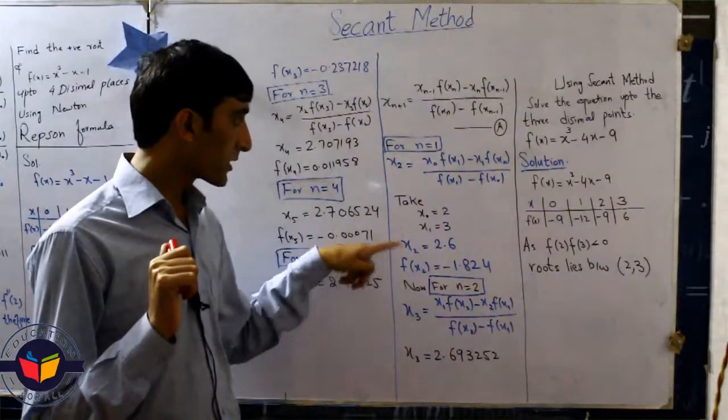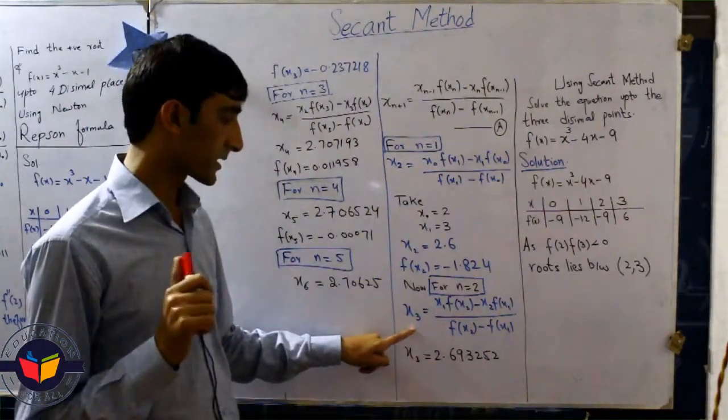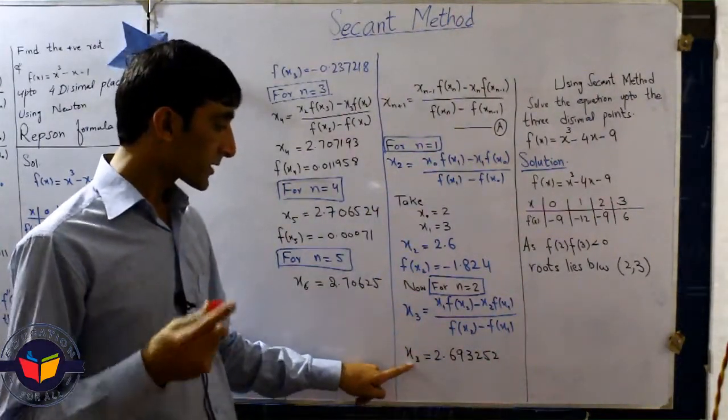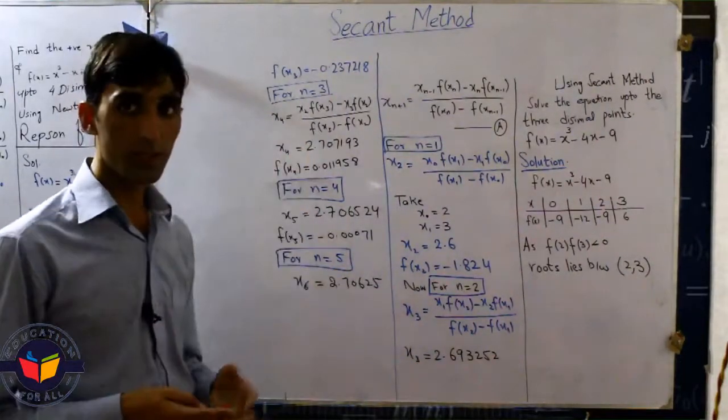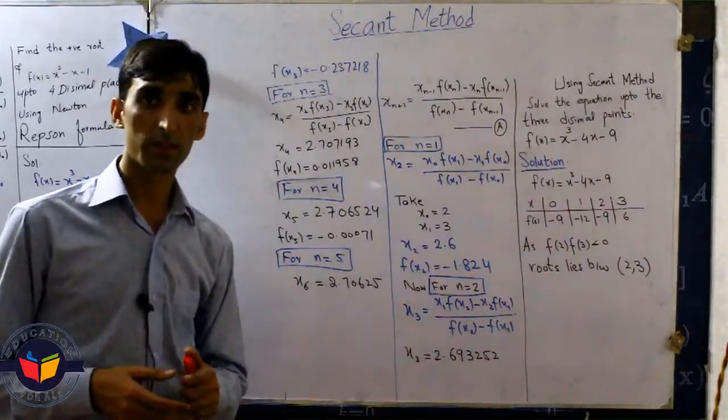After that we put all of these values and get x3. After that we use the value of x2 and x3 and get further zeros and continue this process.